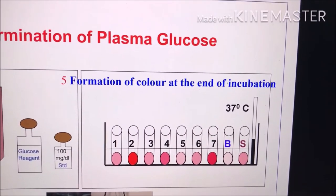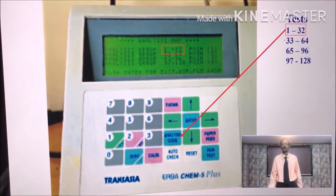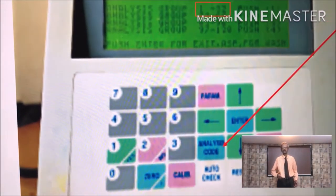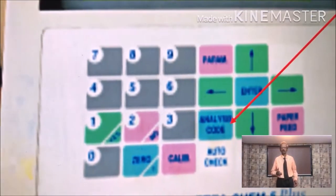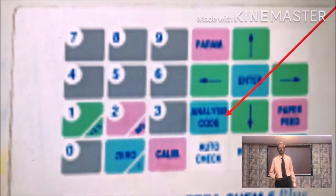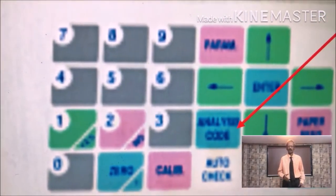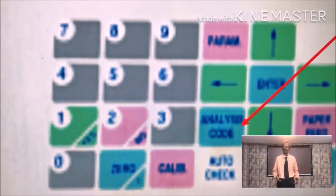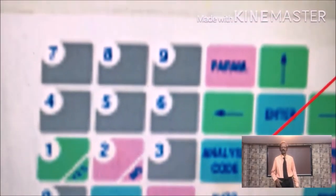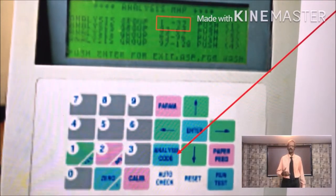After mixing contents of each tube, these tubes are incubated at 37 degree centigrade for 10 minutes. At the end of 10 minutes, colors will form in each tube due to enzyme reactions. And now it is necessary for you to use semi auto analyzer to take further optical density readings and calculation of the results. What you have to learn is the actual use of keyboard of any analyzer.